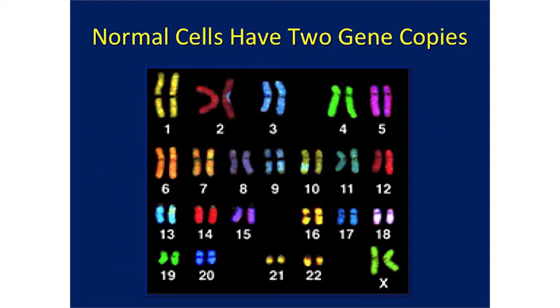For some very basic figures here, this is a human karyotype showing chromosomes. Normal cells have two gene copies — one on each chromosome, one from the mother and one from the father.